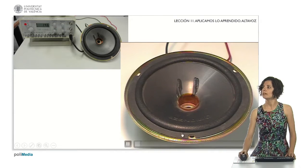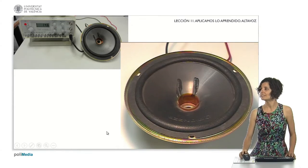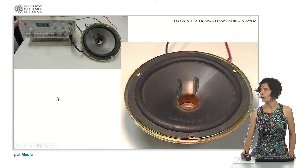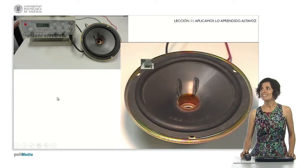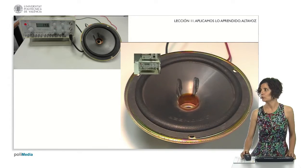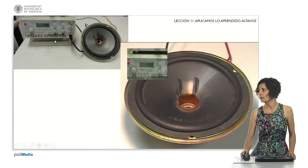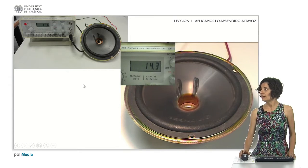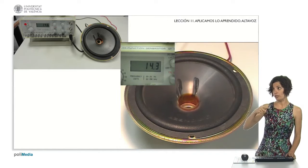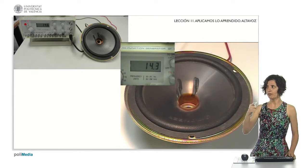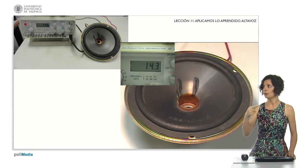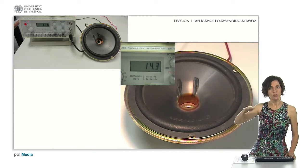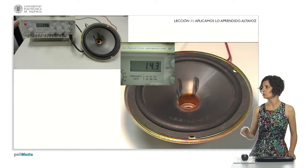Now, let's see it in action. We've connected the speaker to a function generator providing an alternating signal at a frequency of our preference. In this case, we have chosen 14 Hz. This implies that the current alters its flux direction 14 times per second, causing the speaker's membrane to move up and down at the same frequency, 14 times within 1 second.